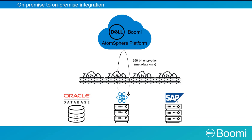This slide shows how we deploy to support a cloud to on-premise integration. In Atomsphere, the blue cloud configures and manages the integration. The integration runtime, which moves the data, resides on-premise behind the firewall. The Atom communicates with the applications and all the data moves through the Atom, but does not run through the Atomsphere platform.